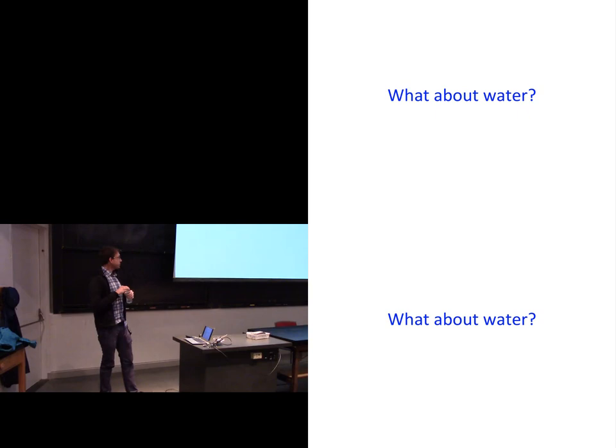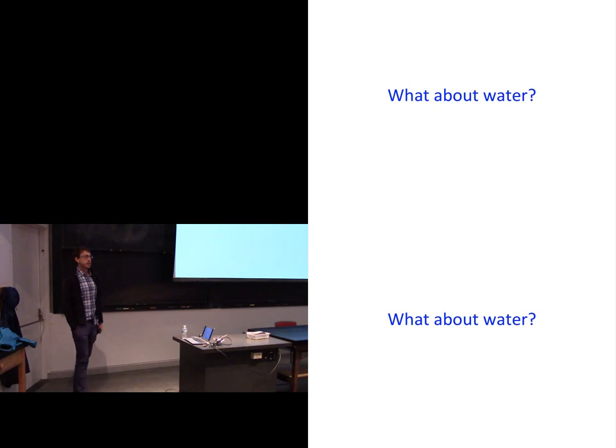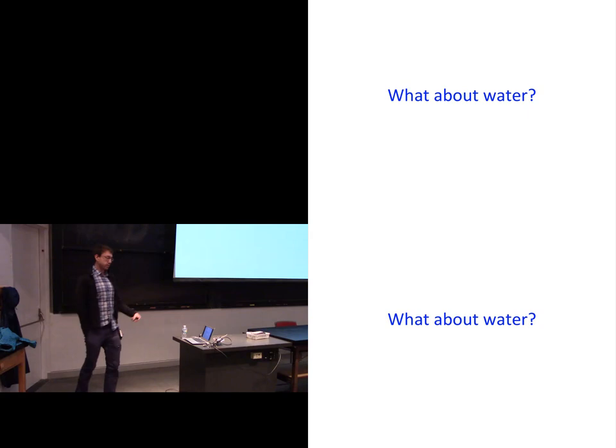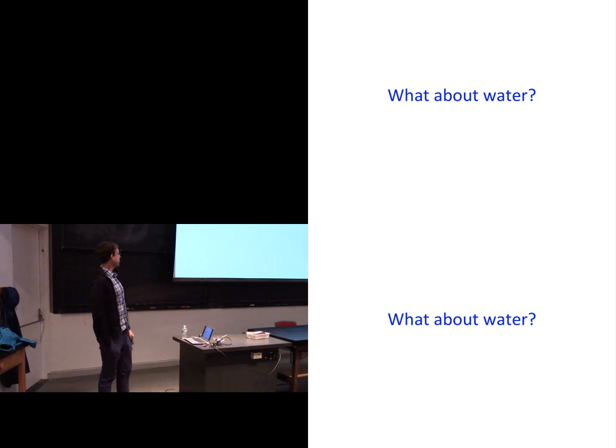Water is one of the most important substances. So far, we've agreed that essentially all life as we know it requires water. One of the questions I want to get into is: when do we know, or how do we know, that the early Earth had water on it? Was it liquid or gas? How far back can we go with evidence for, say, an ocean or lakes on the surface of Earth?